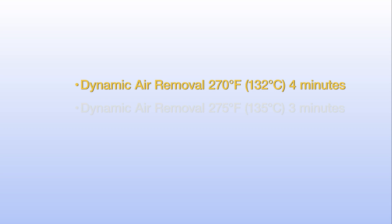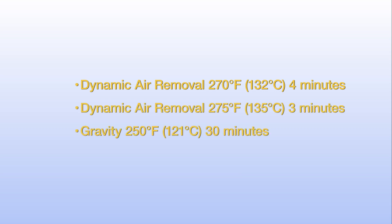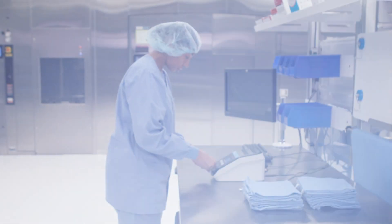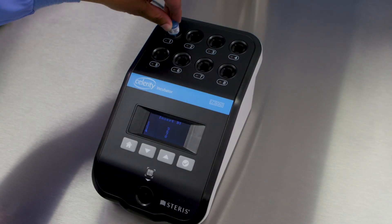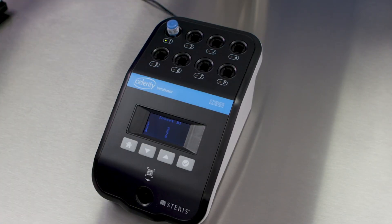The Celerity 20 STEAM Biological Indicator is used for routine monitoring, qualification testing, load monitoring, and product testing of steam sterilization cycles shown on the screen. When used in conjunction with the Celerity Incubator, the incubator provides a fluorescent result within 20 minutes.